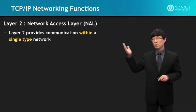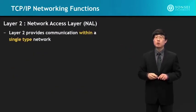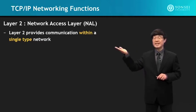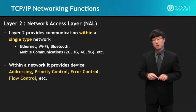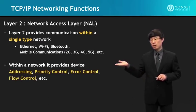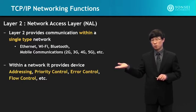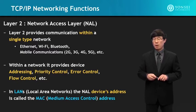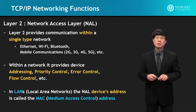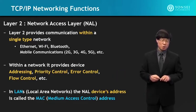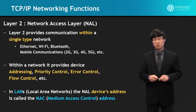Layer 2 — the network access layer — provides communication within a single type of network: Ethernet, Wi-Fi, Bluetooth, or mobile communication. Within a network, it provides device addressing, priority control, error control, and flow control. In local area networks, this device address is sometimes called the MAC address, where MAC stands for medium access control.